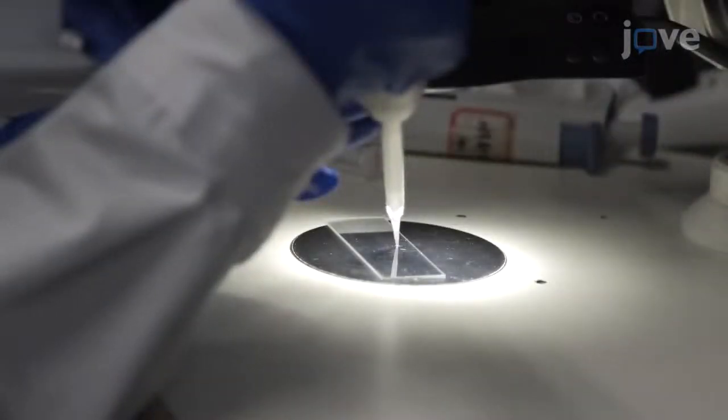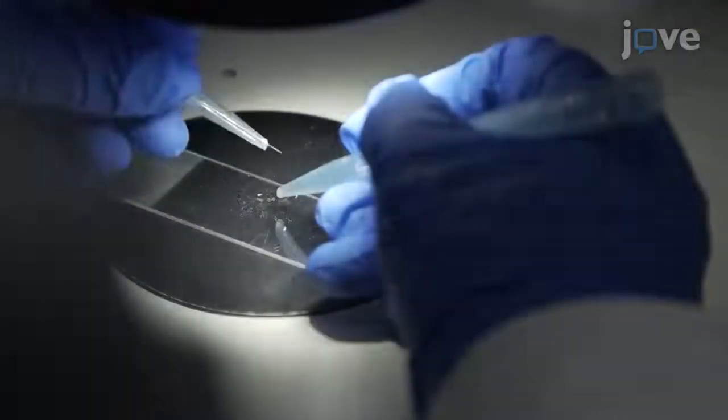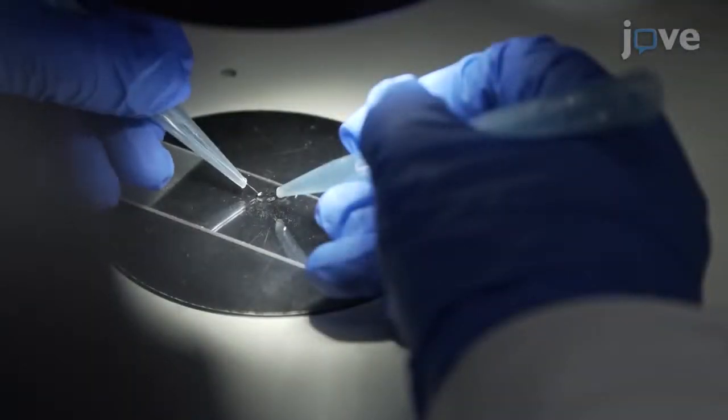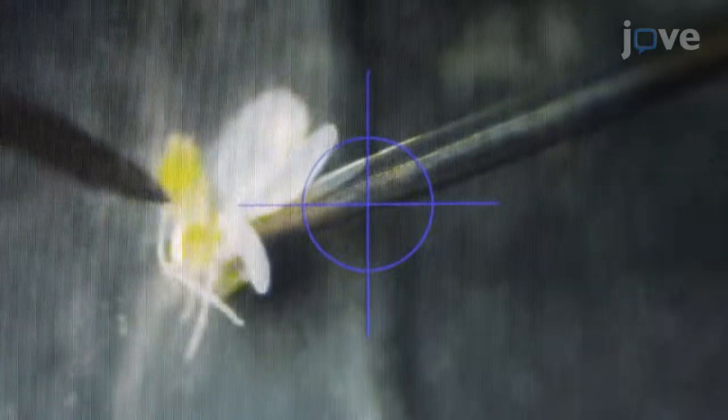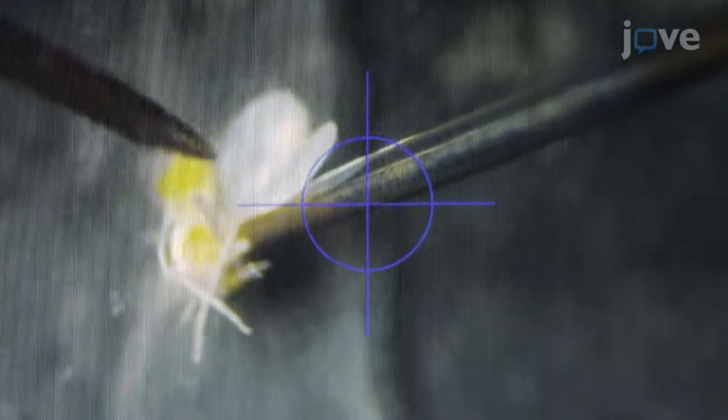To collect a hemolymph sample, add 10 microliters of PBS onto a new microscope slide and place a new whitefly into the droplet. Use a fine acupuncture needle to gently make a hole in the abdomen. Then apply slight pressure to the abdomen to release the hemolymph into the buffer and collect an 8 microliter sample of the liquid.